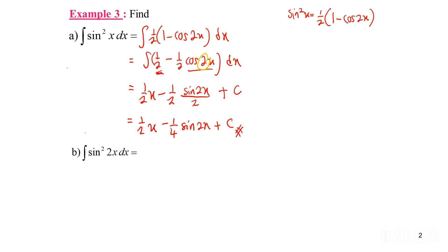Part B: integrate sin squared 2X dx. The function is sin squared; however, the difference from part A is the angle becomes 2X. We still apply the same double angle formula, but we change the angle to double angle 2X. Here the original angles are X and 2X, so what we have to do is multiply the angles by 2. The formula becomes sin squared 2X equals 1/2 times (1 minus cos 4X).